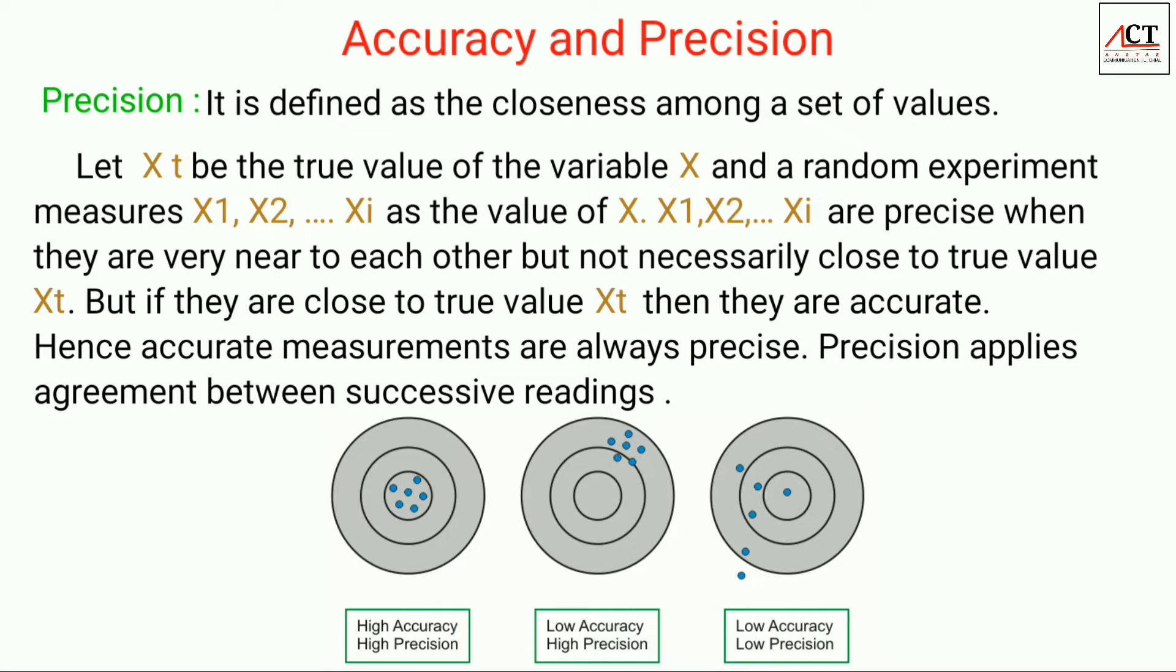In this figure, we can see the first case. If the center represents the true value, then all points are near to the true value, therefore they have high accuracy. And also, the points are close to each other, so they have highly precise values. In the second figure, the points are away from the center, that is the true value, therefore are less accurate. But all points are close to each other, therefore are highly precise. In the third case, neither the points are close to the true value nor they are close to each other, therefore they are less accurate and less precise.